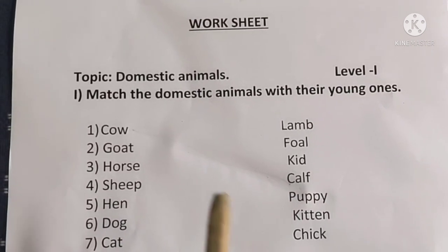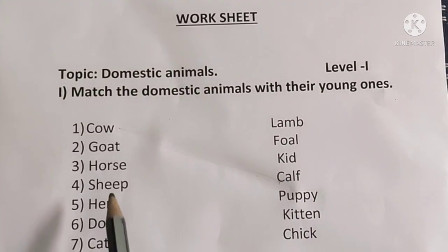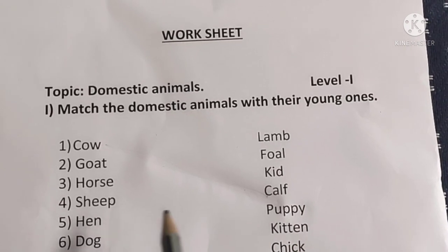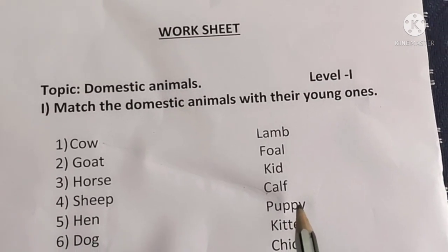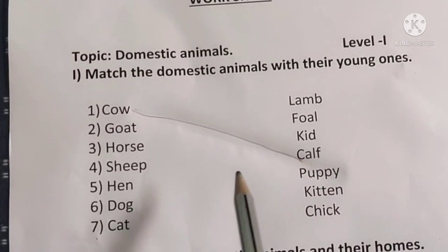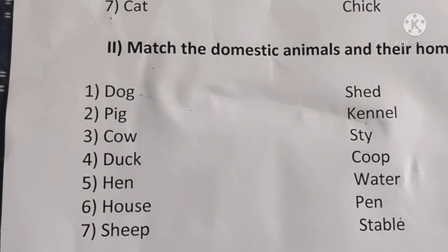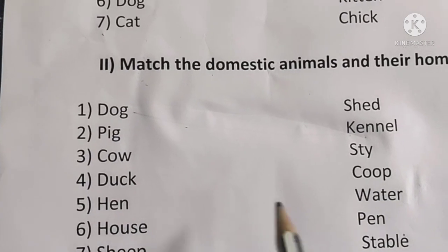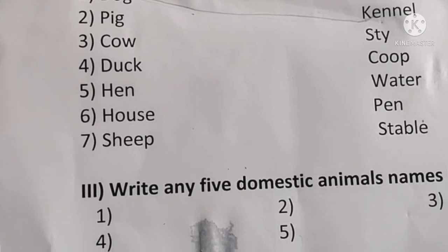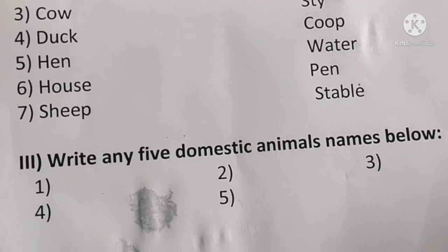Children, do this worksheet. Match the domestic animals with their young ones. One side we have some animal names, and on the second side we have their young one names — you have to match them. In the third part, write any five domestic animal names in the space below.